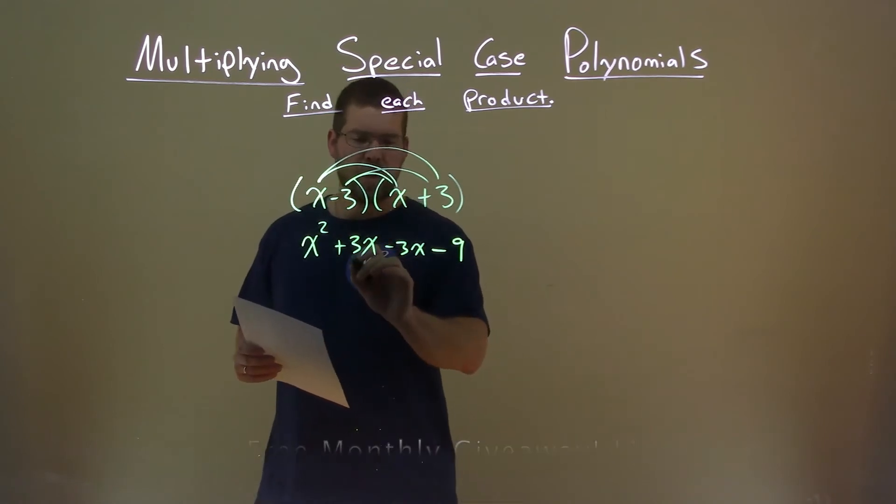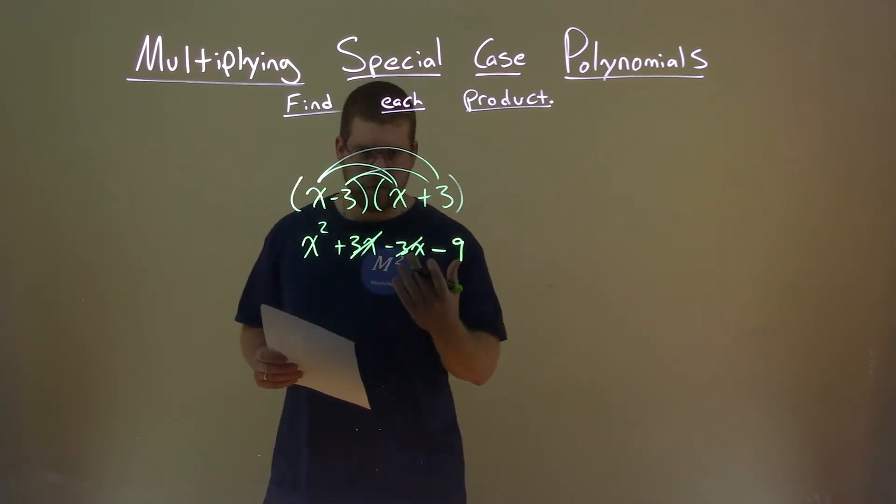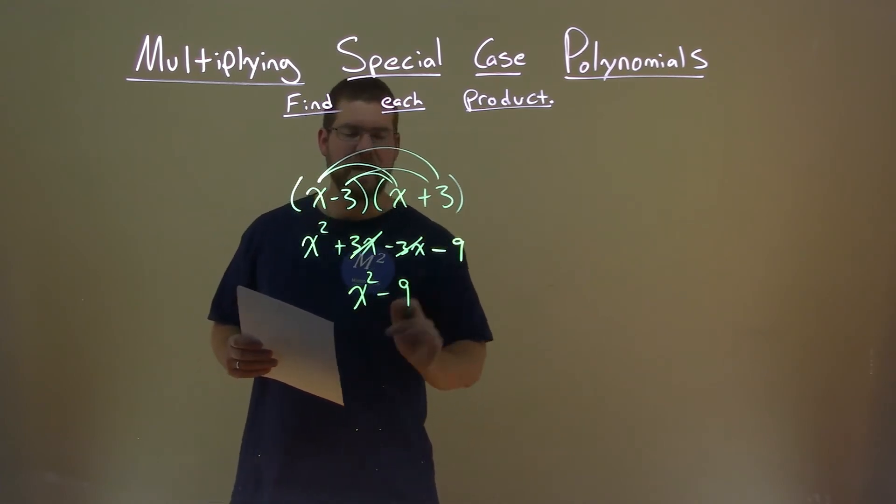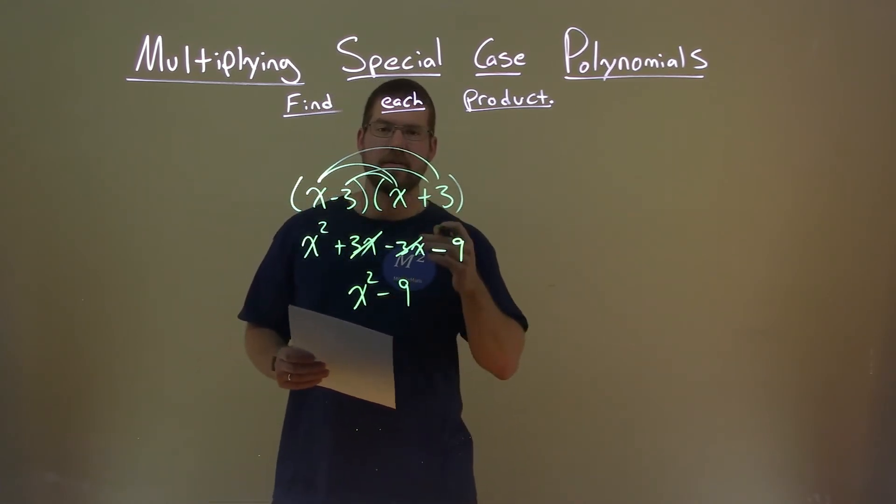And here's the trick, 3x and the minus 3x cancel each other out, leaving us with x squared minus 9 as our final answer.